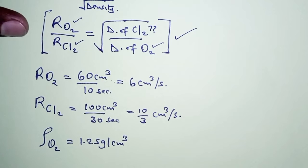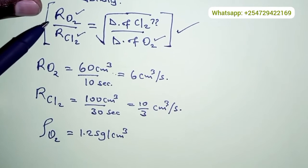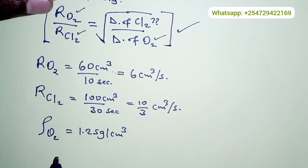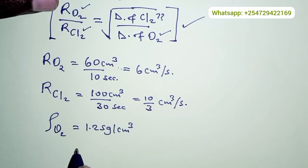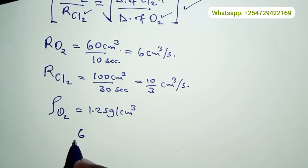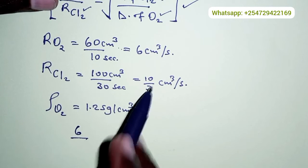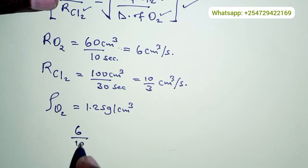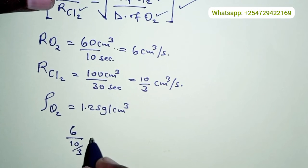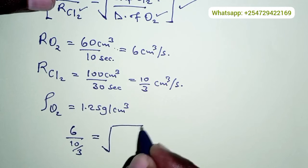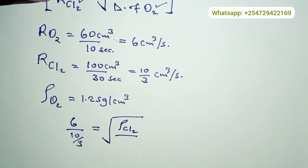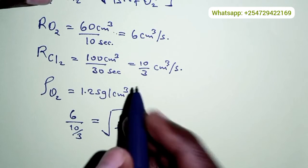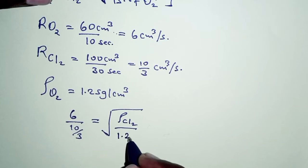We are going to do our substitutions. For the ratio of the rates of diffusion, we have 6 cubic centimeters per second divided by 10/3, equal to the square root of the density of chlorine gas over the density of oxygen, which is 1.25 grams per cubic centimeter.